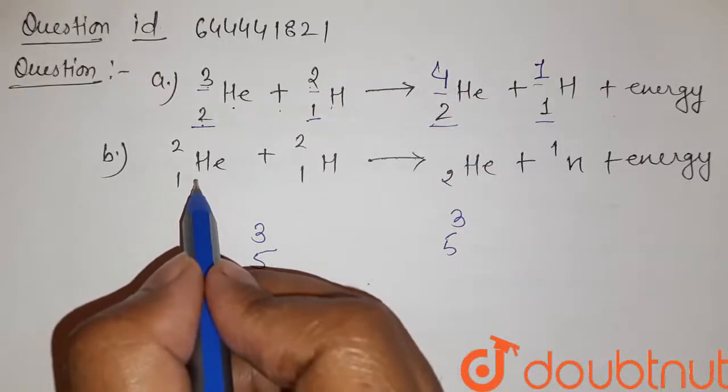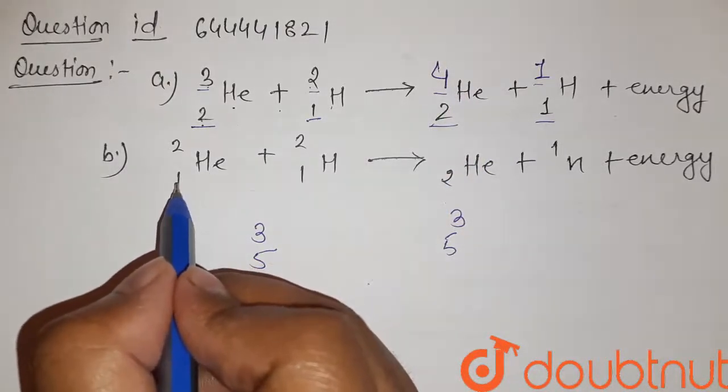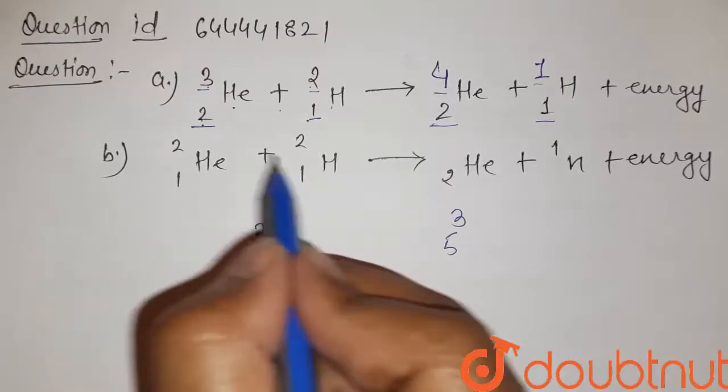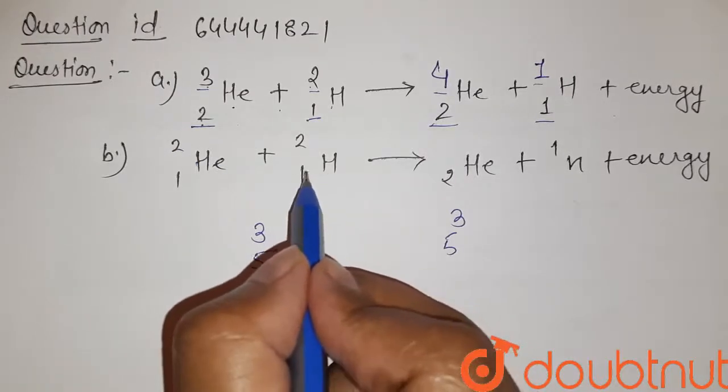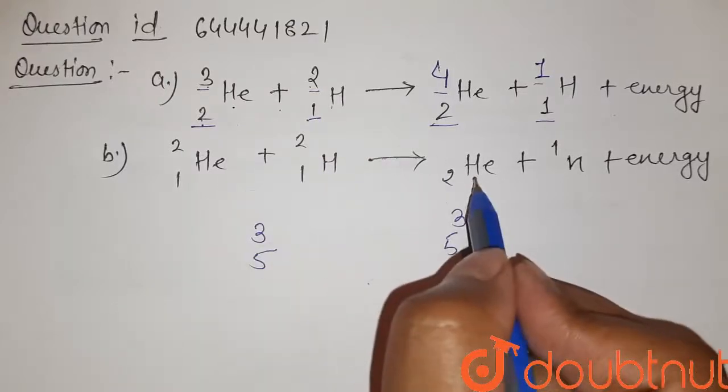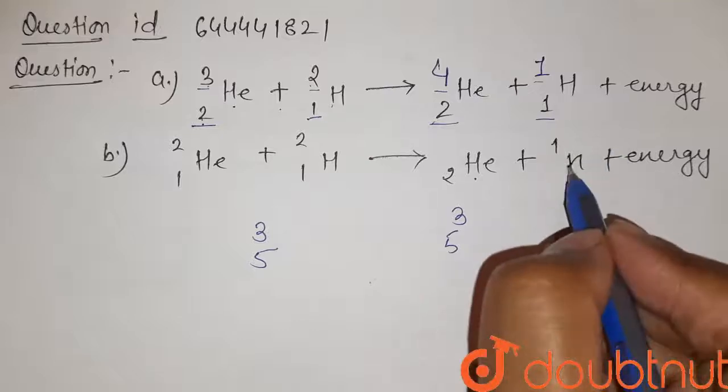Now in second equation, here we have this element, its atomic number is 1 and its mass number is 2. Here also this element has atomic number 1 and mass number 2. So it is converted into this new element and 1 neutron.